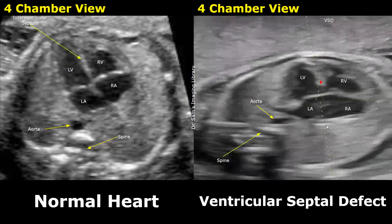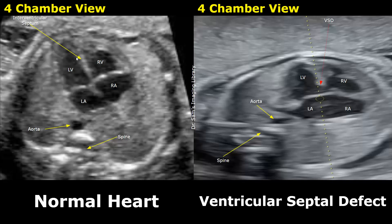The septum or wall between the right and left ventricle is the interventricular septum. In a ventricular septal defect, there is a hole or defect in this interventricular septum. This defect can be associated with Edwards syndrome.